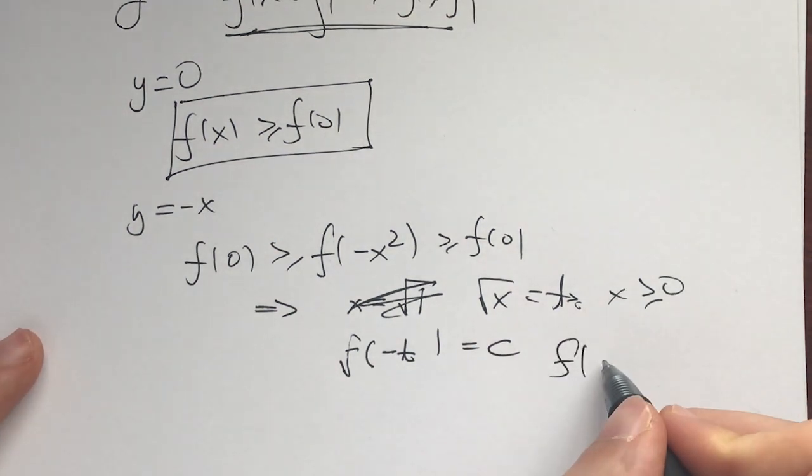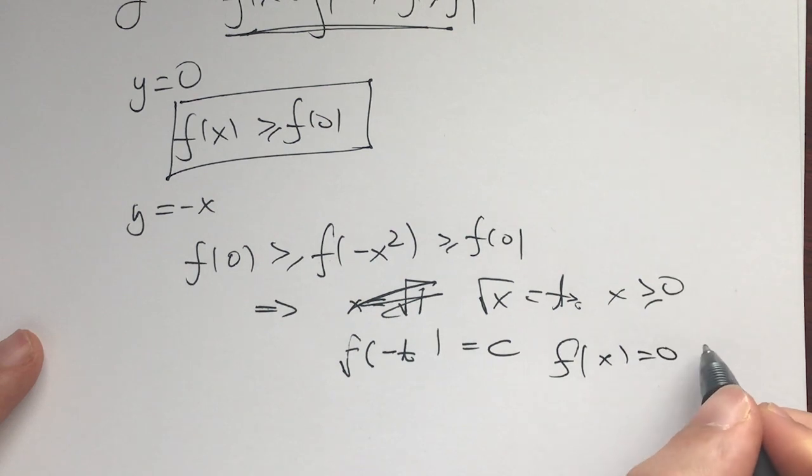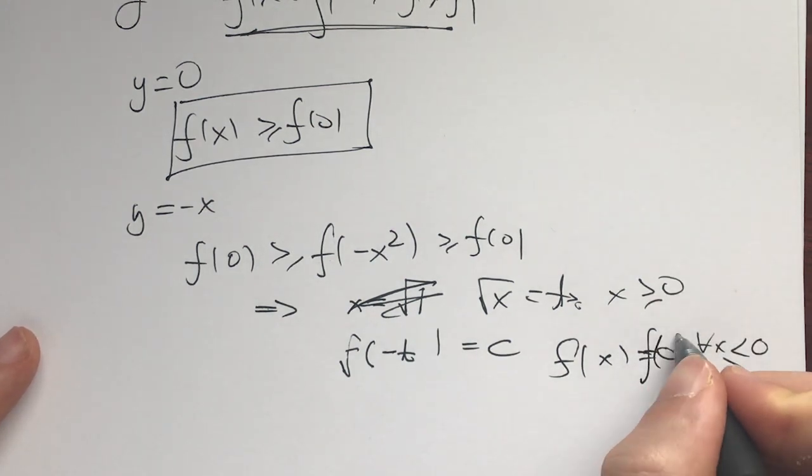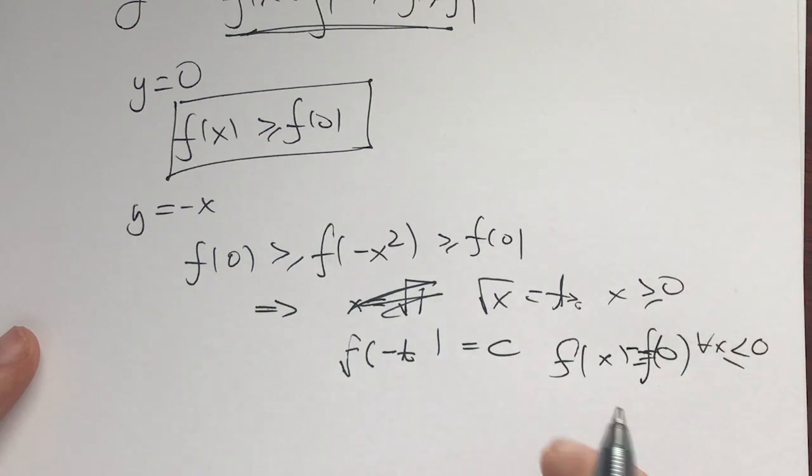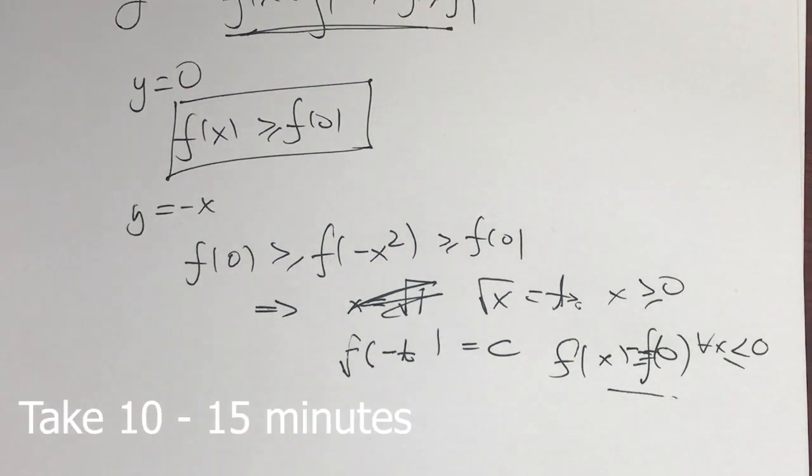We have f(x) equal to f(0) for all x ≤ 0, which is a constant. And the contradiction will probably be that f of everything equals f(0). Now, I invite you to take another 10 to 15 minutes and try to go for the positive real numbers.